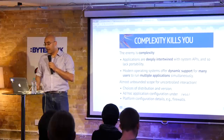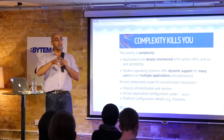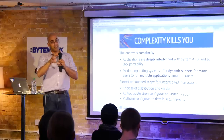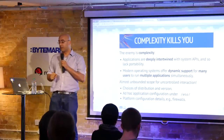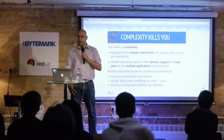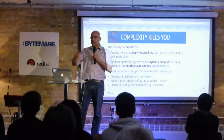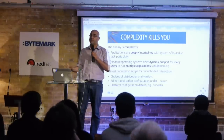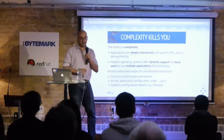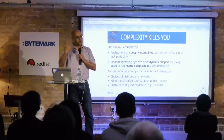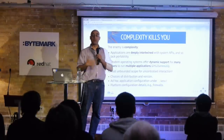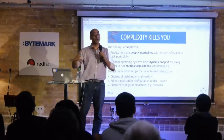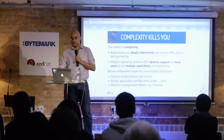We've seen in other talks a number of the hacks and extensions you have to build to specialize something for Linux — for a particular user-space network stack or whatever to make things work. And the thing we're trying to get rid of is this unbounded scope for uncontrolled interaction between components. There are choices all the way up into the network stack, from the hypervisor to the operating system to the application, and all of the frameworks in between.